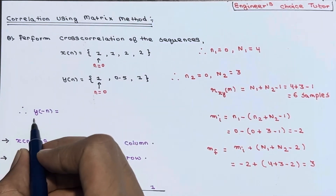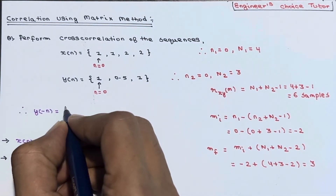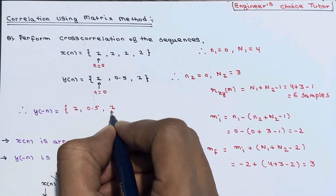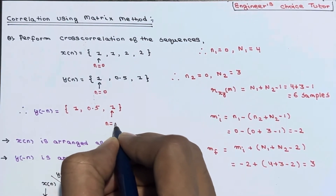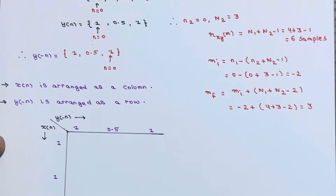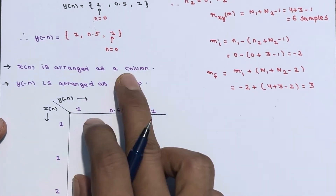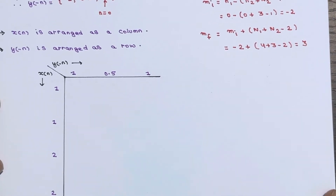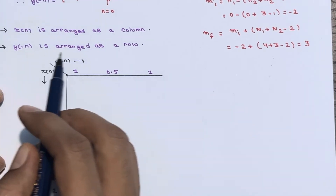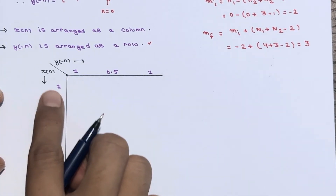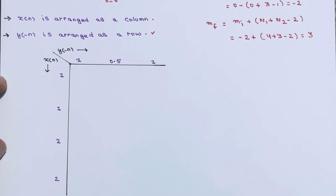Since y(n) = {1, 0.5, 1}, y(-n) will be {1, 0.5, 1} — it remains the same in this case, with n=0 indicated by the arrow. Now we perform linear convolution using the matrix method. Arrange x(n) as a column with values {1, 1, 2, 2}, and arrange y(-n) as a row with values {1, 0.5, 1}.